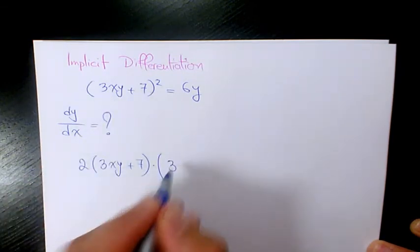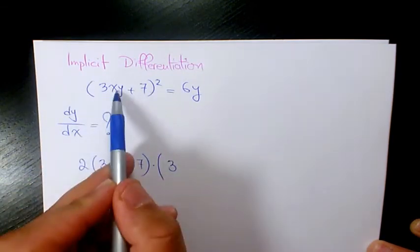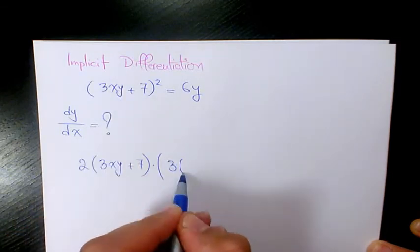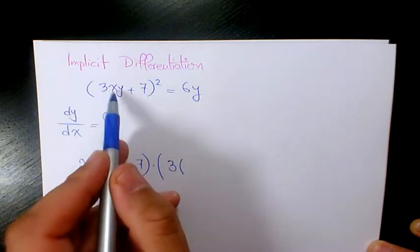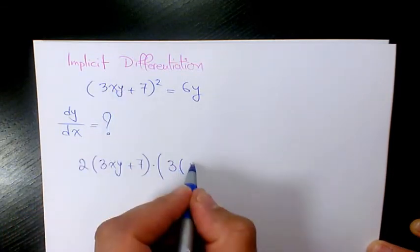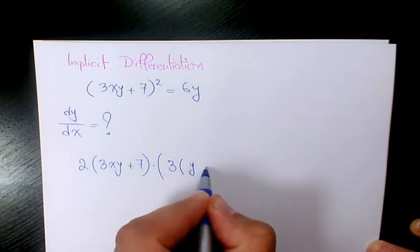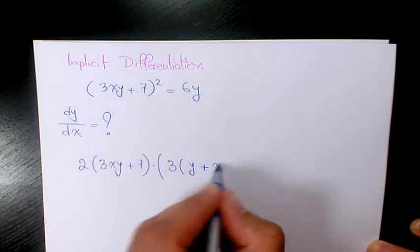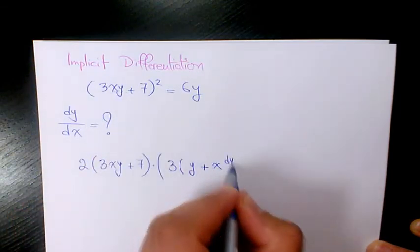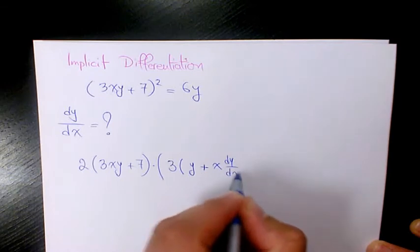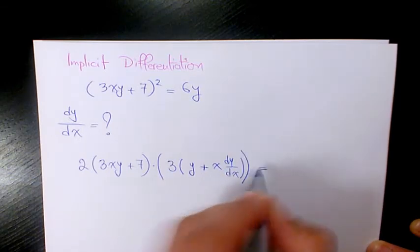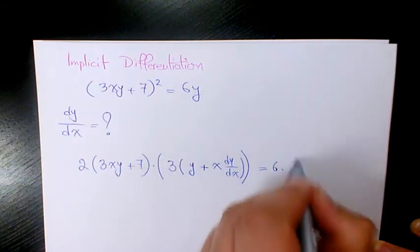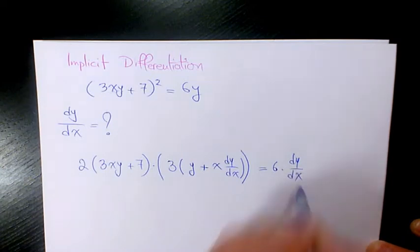which will be 3 times x times y. That's the product rule. I'm going to have derivative of x times y, which is going to be y plus x times derivative of y, which is x dy over dx. Equals to 6 times derivative of y with respect to x.